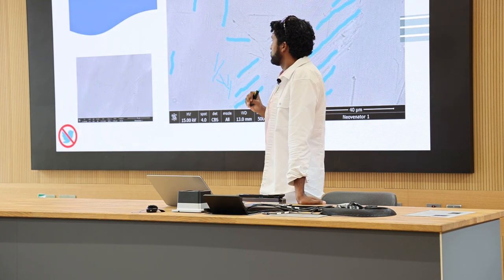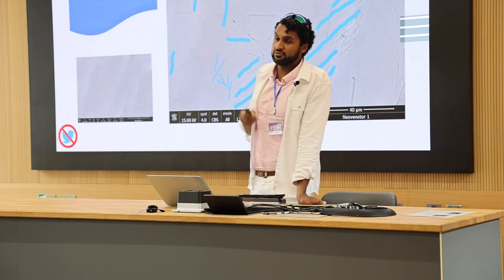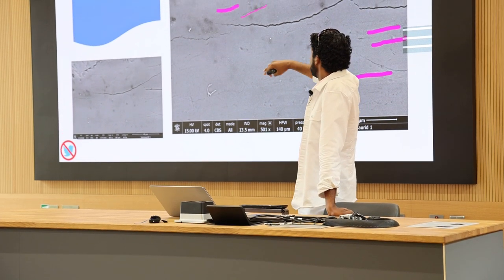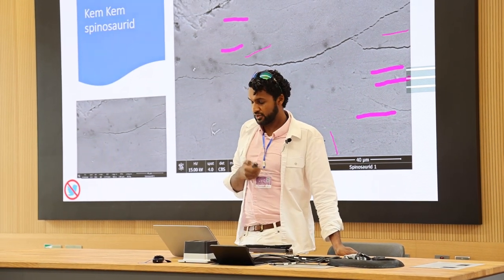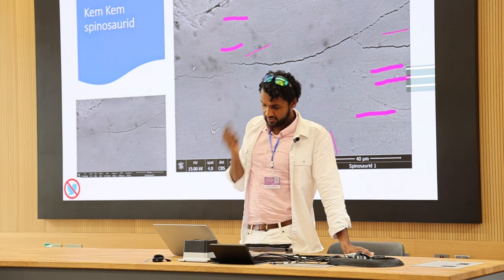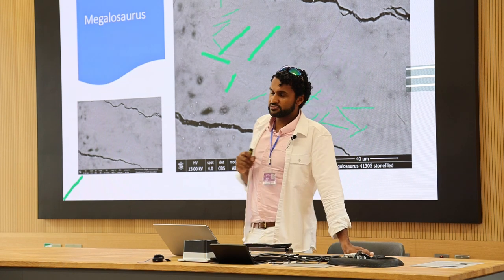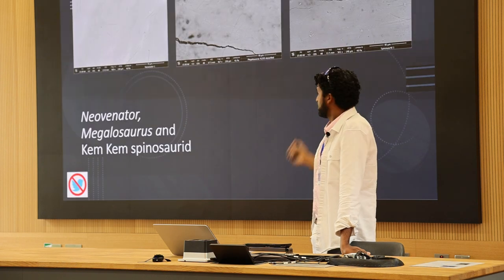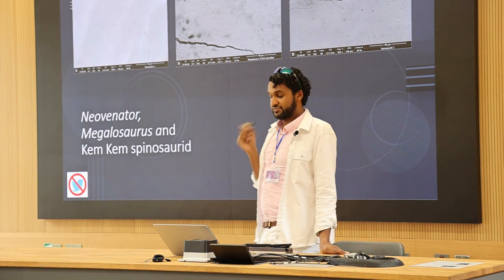This is a carnivorous dinosaur called Neovenator, and as you can see it has quite a good number of scratches with a variety of lengths and thicknesses. Here we have a spinosaur — a known fish-eater — and you can see it has only a couple of marks, not many. Now here is a Megalosaurus, which is one we're testing at the moment. It doesn't have as many scratches as Neovenator the carnivore, but it has more than the spinosaur. So if you put them next to one another, the megalosaur sits somewhat in between Neovenator the carnivore and the fish-eating spinosaur.